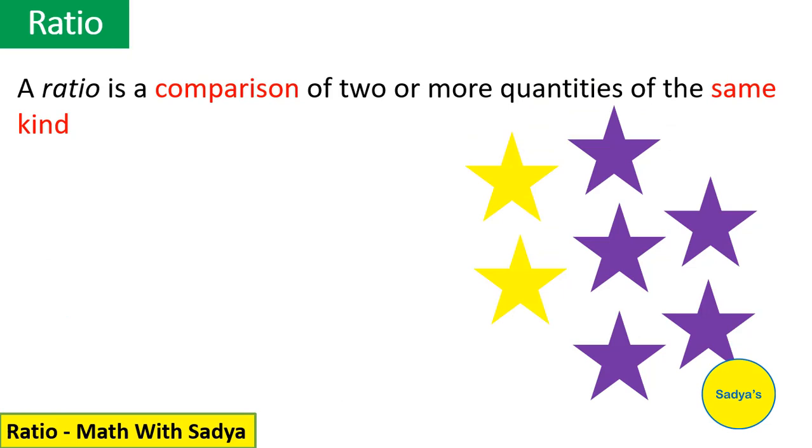Ratio is a comparison of two or more quantities of the same kind. Ratio में हम compare करते हैं quantities जो के same kind की हो. For example, यहाँ पे आपके पास stars हैं - कुछ yellow stars हैं, कुछ purple stars हैं. तो यहाँ पे जो हम comparison कर रहे हैं, वो हम stars के दर्मियान कर रहे हैं. Same kind है, सब stars हैं.